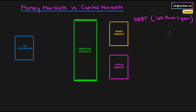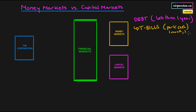Different products you might see within money markets include treasury bills. Treasury bills are available in Canada and the US, and they're sold on a discount basis — for example, at 99.5% of face value, where face value is usually $100. Treasury bills are government debt that you can buy and invest in to park cash in a risk-free asset, earning a small amount of interest. You can purchase them for one month, three months, or six months — always with maturities of less than one year.